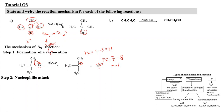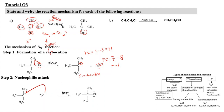For step two, the carbocation produced is very stable — it is a tertiary carbocation. This allows nucleophilic attack by the hydroxide ion. NaOH dissociates in aqueous solution to give Na⁺ and OH⁻. The oxygen carrying a negative charge attacks the positive carbocation, attaching the oxygen to the carbon and producing our alcohol, which matches the product shown in the reaction.